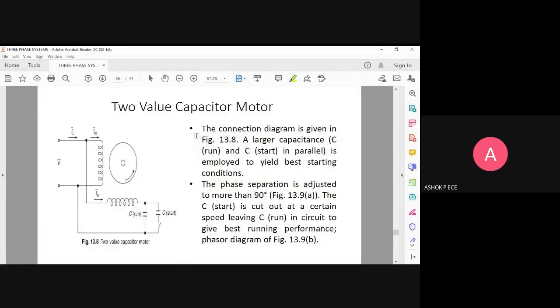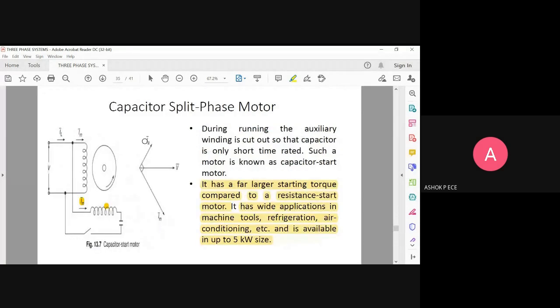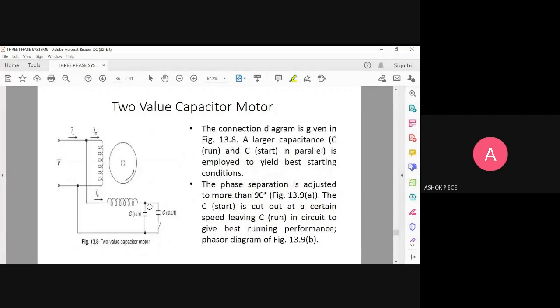Next one is two-value capacitor motors. In the diagram, as an advancement over the previous diagram where I had one capacitor, now I am going to have two capacitors: one for starting and one for running. Instead of cutting the auxiliary winding, the auxiliary winding will remain, but I will be using two capacitors, one for starting and one for running.